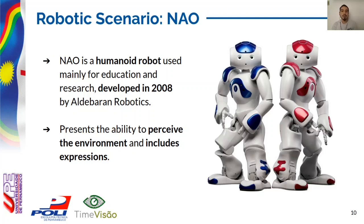NAO is a humanoid robot used mainly for education and research purposes. It was developed in 2008 by Aldebaran Robotics, which now is a SoftBank Robotics Group subsidiary company. It presents the ability to perceive the environment from a broad range of sensors like cameras, microphones, and tactile sensors among others. It also includes expression elements like 53 RGB LEDs, voice synthesizers, and two speakers, which gives a high degree of interaction. It supports a variety of programming languages to configure its behavior. Additionally, the Choreographe software allows interactive action programming using a flow diagram, and can work online with the robot's hardware, keeping dialogues and capturing elements recognized through its cameras.